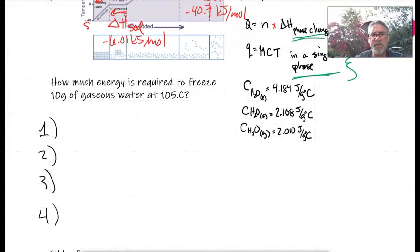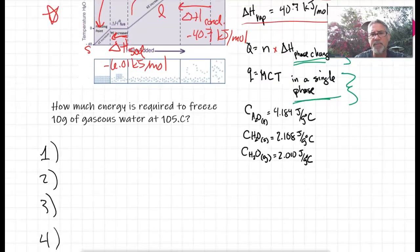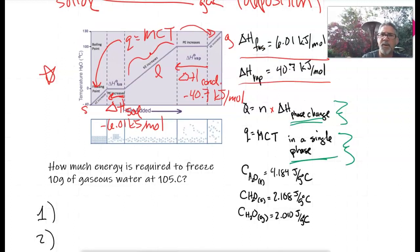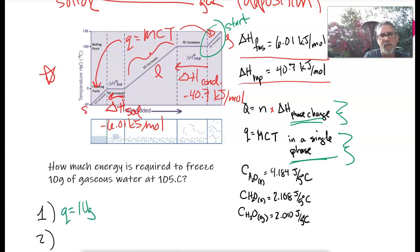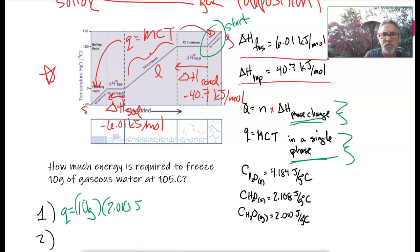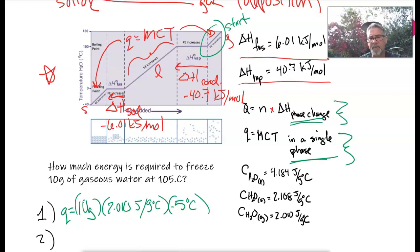So how much energy is required to freeze 10 grams of gaseous water at 105 degrees? If I've got gaseous water, I'm up in the gas phase. I've got to get down to 100 degrees before I can go through a phase change. Step 1: Q equals MCT, so mass is 10 grams, C for gas is 2.010 joules per gram degrees Celsius, and my temperature change is negative 5 degrees Celsius since I've got to go down 5 degrees.